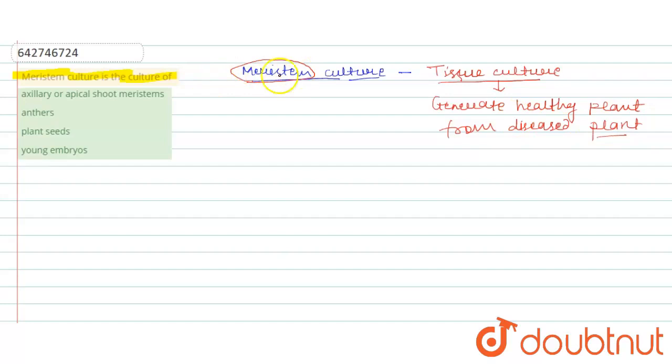In this culture, meristem culture, in this process the meristem is isolated and grown in the sterile condition.